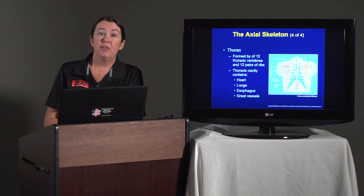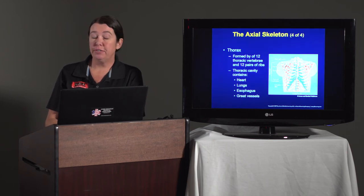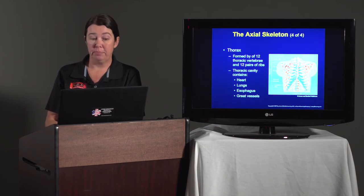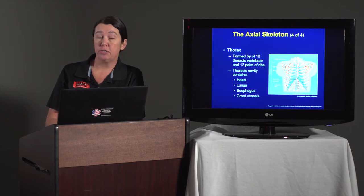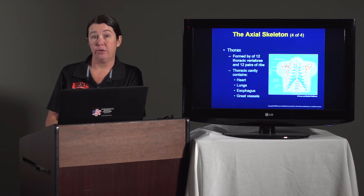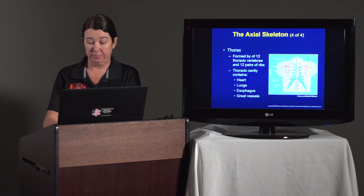The thorax is formed by 12 thoracic vertebrae and 12 paired ribs. The thorax contains the heart, lungs, esophagus, and great vessel.